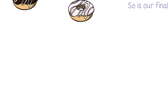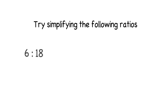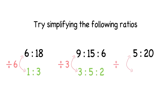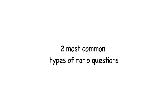Pause the video and see if you can try and simplify the following ratios. In the first question we can divide both numbers by six, so the simplified ratio would be one to three. In the middle we have three numbers but we treat it exactly the same — they're all in the three times table, so the simplified ratio would be three to five to two. In the last question I can divide both numbers by five, so my ratio will be one to four.